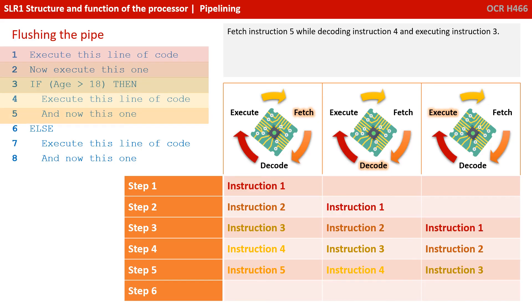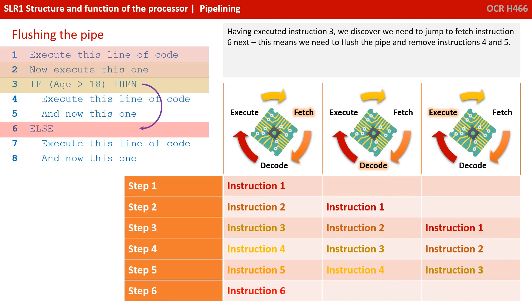Now we potentially have a problem. We're fetching instruction five, decoding instruction four, and executing instruction three. But if you notice from the pseudocode, instruction three may cause us to branch elsewhere. Indeed, that's exactly what has happened — having executed instruction three, we discover we actually need to jump and fetch instruction six. This means instructions four and five, which are already being fetched and decoded, now need to be flushed and removed. This is known as flushing the pipe.